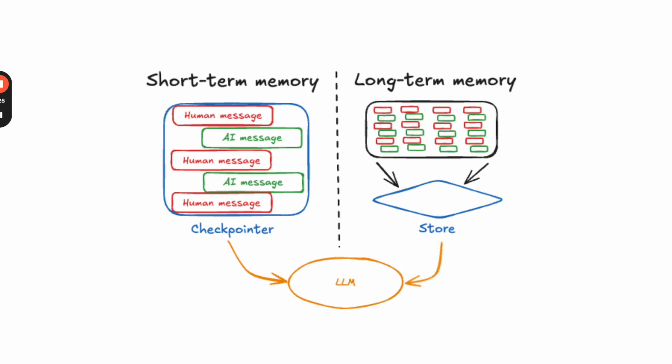Long-term memory is a new concept that we've recently started to think about and talk about, and we've added a new abstraction called store to help with this in LangGraph. Where LangGraph checkpointers keep memory within a thread, store is used to keep memory across threads. So it can be updated with information gleaned from multiple different threads, and then can pull that in when processing a new thread. Let's talk about some short-term memory things first, and then we'll dive into more detail on long-term memory.